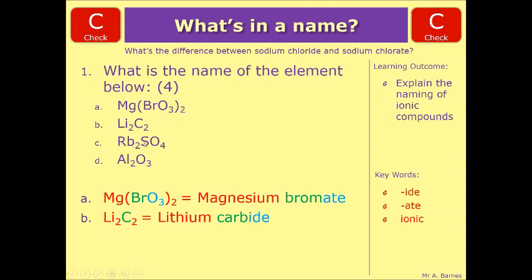Part C, we've got rubidium and sulfur, so it's rubidium sulf-, then it's got oxygen, so rubidium sulfate.